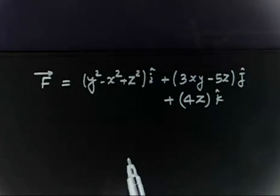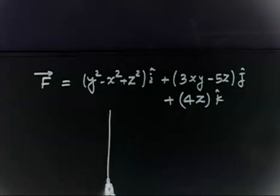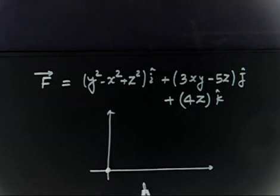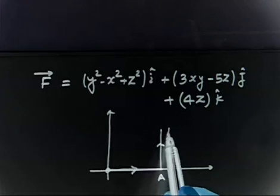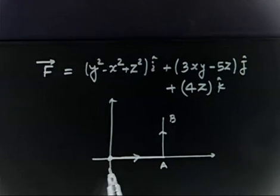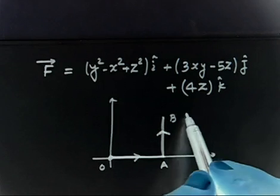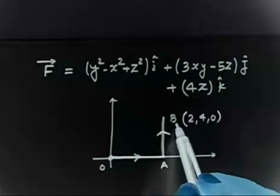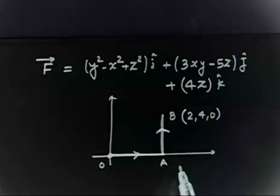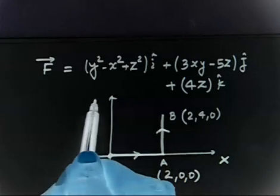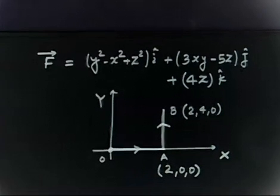A particle is taken from the origin to point A, and then from point A to point B. The final point B has coordinates (2, 4, 0). The coordinate of A: x-coordinate is 2, y-coordinate is 0, z-coordinate is also 0, because the particle is taken in the x-y plane, so z is always 0.